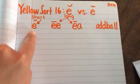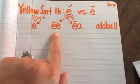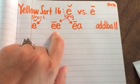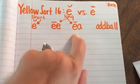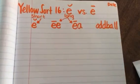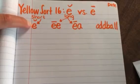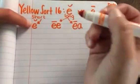Alright, so we have our four categories: short E, long E spelled E-E, long E spelled E-A, and then one oddball word. So let's begin with the short E sound. There are four words in this category.